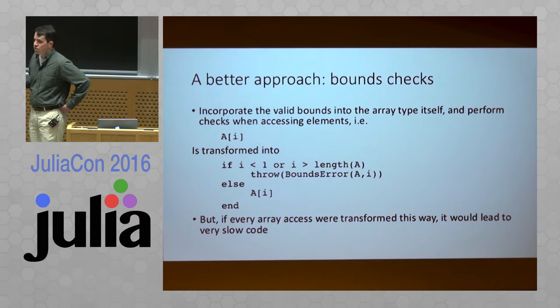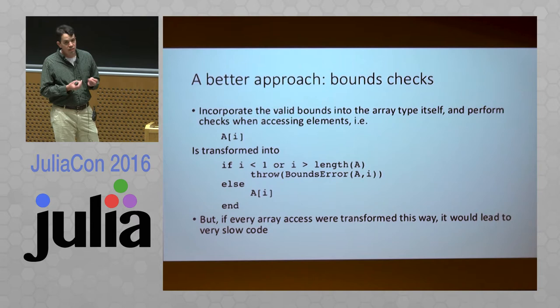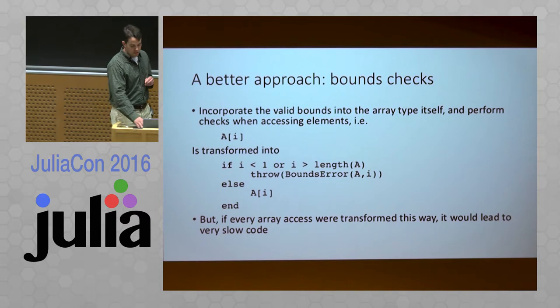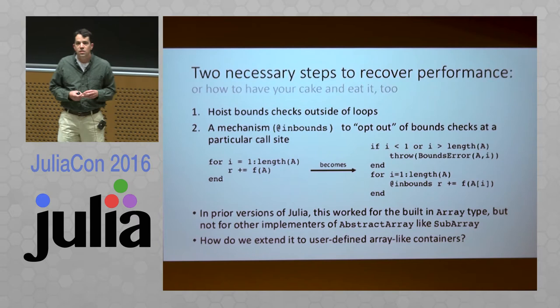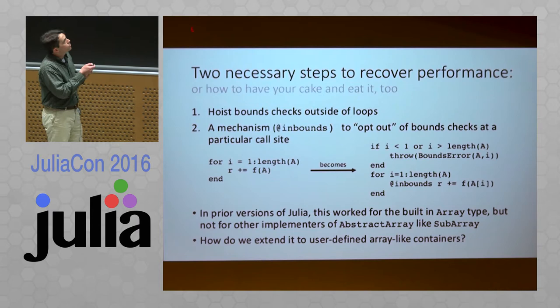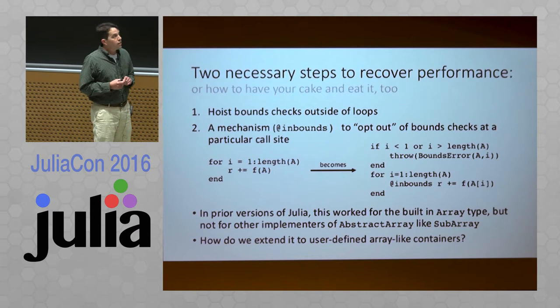This is a huge usability boon, but you might wonder if it's coming at the expense of performance. It would be costly if every array access had to do a bounds check — particularly in Julia, because exceptions create garbage collection frames, so even the possibility of a branch is a performance trap. Julia is a greedy language: we want both safety and performance. The well-trodden path to get both is to hoist bounds checks outside of loops, so you check just once that all array accesses inside a loop will be valid, and then opt out of checking inside the loop.